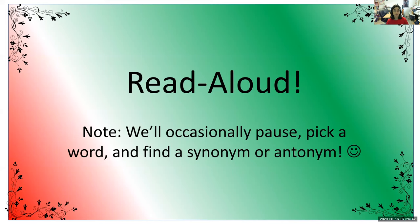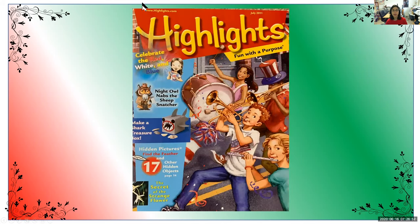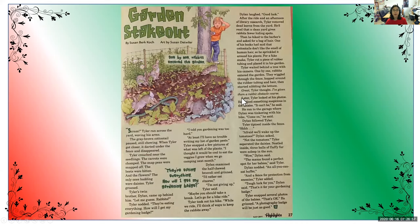Now it is time for our read aloud. We're going to pause every once in a while, pick a word, and find a synonym or antonym. We're going to read the whole thing through first. This is from Highlights Magazine, July 2011, called Garden Stakeout by Susan Burke Koch, art by Susan Detweiler.